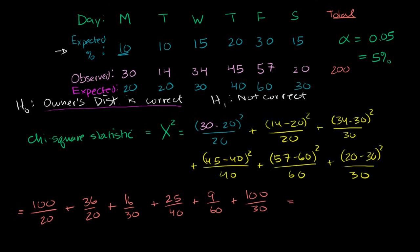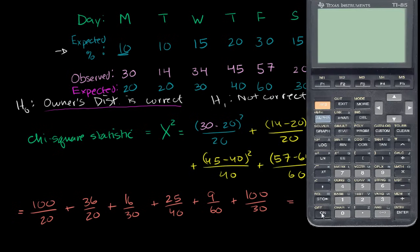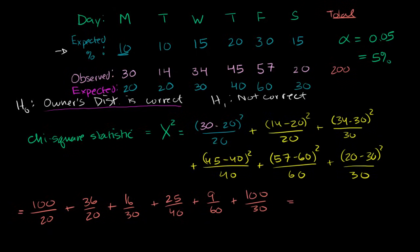Using a calculator: 100/20 + 36/20 + 16/30 + 25/40 + 9/60 + 100/30 = 11.44. So our chi-square statistic X² = 11.44. This statistic has approximately a chi-square distribution.